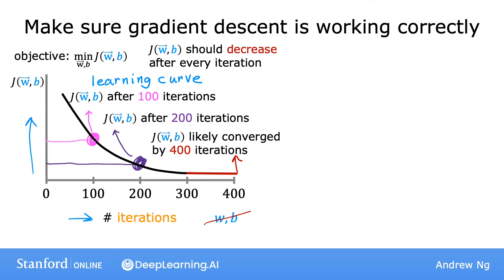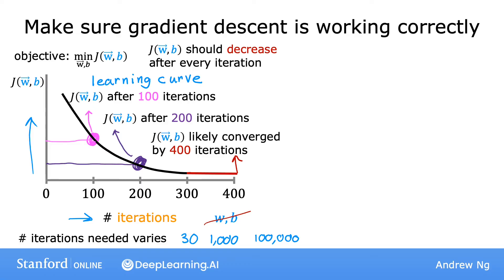Looking at this learning curve, you can try to spot whether or not gradient descent is converging. The number of iterations that gradient descent takes to converge can vary a lot between different applications. In one application it may converge after just 30 iterations; for a different application it could take 1,000 or 100,000 iterations. It turns out to be very difficult to tell in advance how many iterations gradient descent needs to converge, which is why you can create a learning curve to find out when you can stop training your particular model.